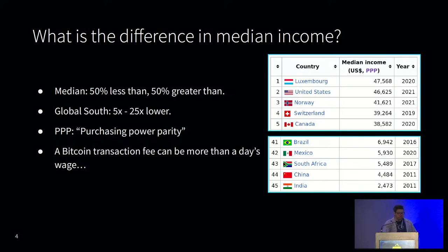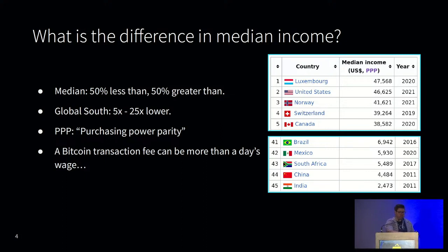The difference in income is staggering. Incomes in the Global South can be up to 25 times lower than in the North, and more. This is also adjusted for purchasing power parity, which means the figures are actually inflated for places with a lower cost of living. And since these are median incomes, it means that 50% of people actually earn less than this. Looking at data for South Africa, the median is about $5,500 a year — which is only $15 a day. Half of South Africans earn less than that.